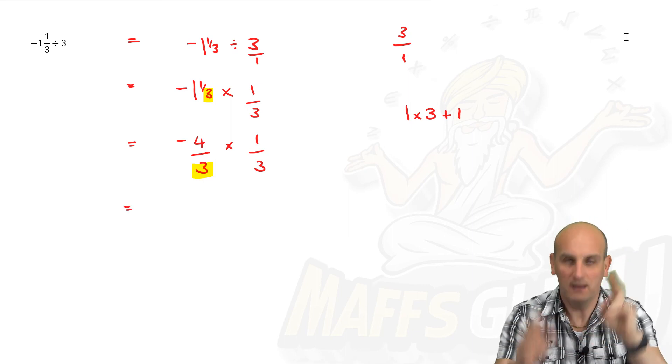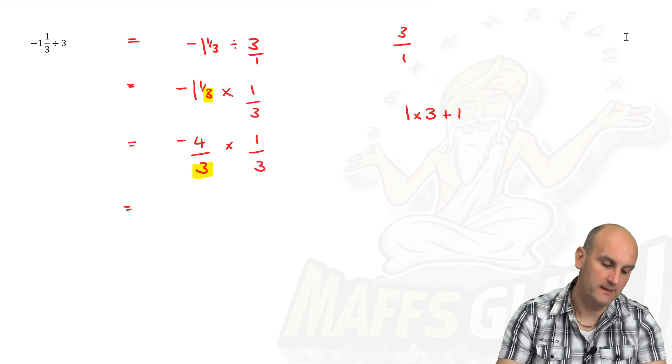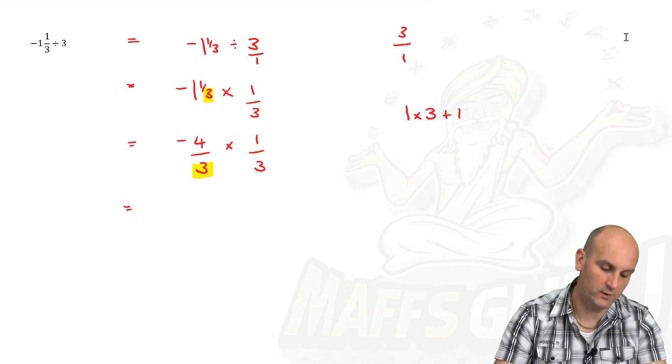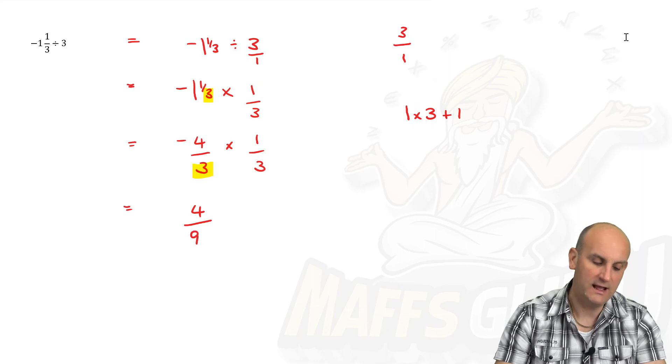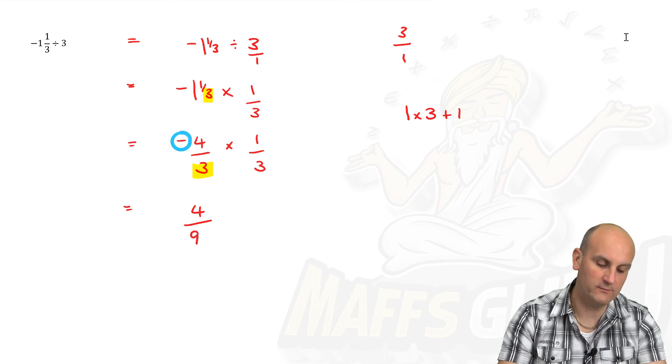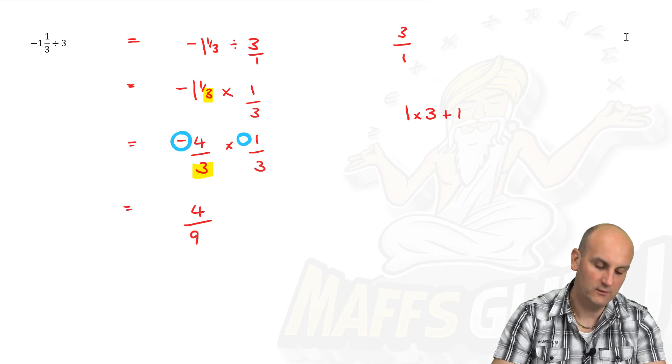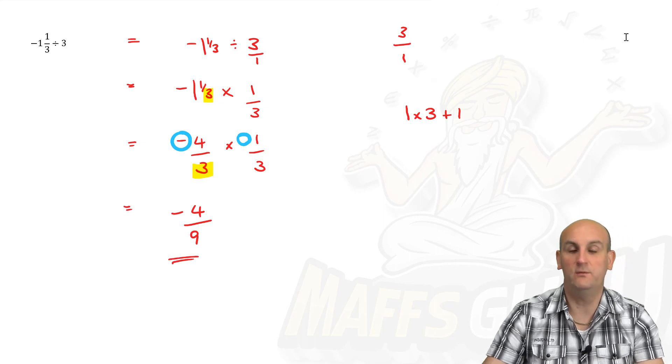And is it a plus or a minus? No, it's a times. So we can ignore the signs for a moment. So we're going to do four times one, which is four, three times three, which is nine. And then if you remember, now I go back and do my signs, which is a negative and a positive, which is a negative. And there we go.